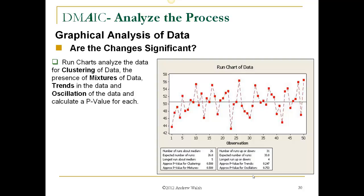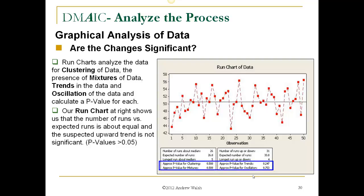Now run charts can analyze the data for clustering of the data, the presence of mixtures, trends, and oscillation. And each are calculated with a p-value. Our run chart at right shows us that the number of runs versus the expected runs is about equal, 26, 26, 31, 33. And the expected upward trend really is not significant. So the p-value is less than .05. So for a trend, it's .247. This is not unexpected.